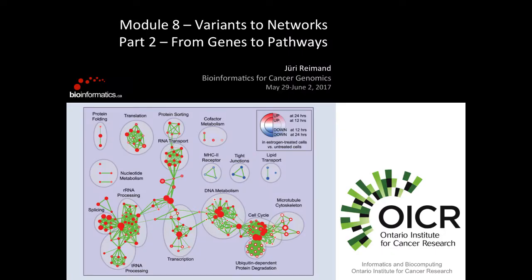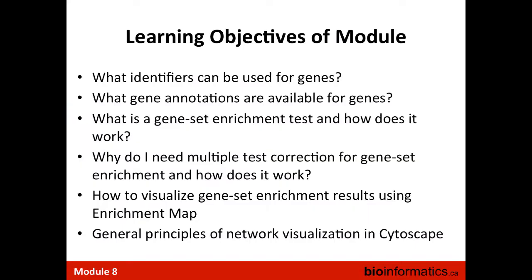We will change gears and assume that you have mapped all your genomic variants from cancer genome sequencing to some really interesting genes, and you want to map these genes further to networks to understand what they might be doing in the context of cancer biology, perhaps with some clinical relevance, and also because mutations tend to be sparse and you can use the idea of pathways and networks to group together meaningful variants into biological themes.